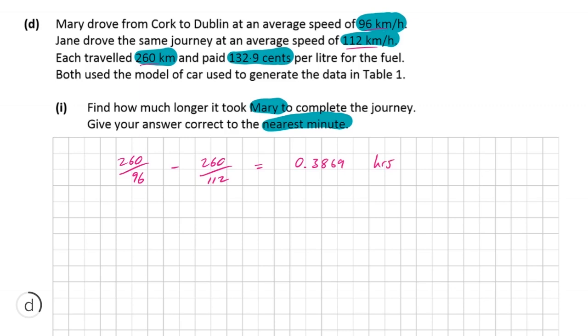But of course, to convert that into minutes, we're just going to multiply it by 60, which is going to be 23.21 minutes. And correct to the nearest minute, that's obviously 23 minutes. So that's the difference in time it took between the two of them completing their journeys. And that's going to be worth five marks.